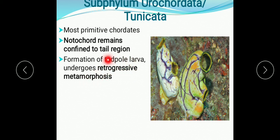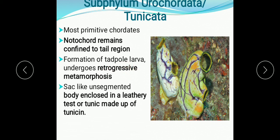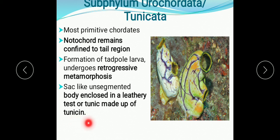Retrogressive metamorphosis means the tadpole larvae has all the features of Chordata which undergo reduction in the adult. The body is sac-like and unsegmented, enclosed in a leathery test or tunic — that is why the other name is Tunicata. The body covering is in the form of a leathery test or tunic made up of tunicin.